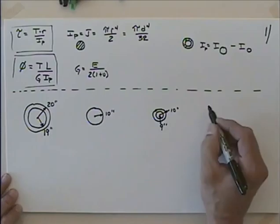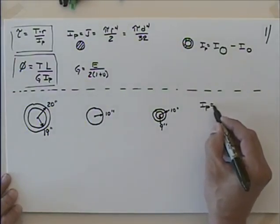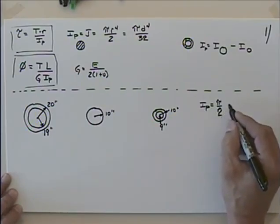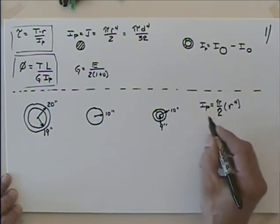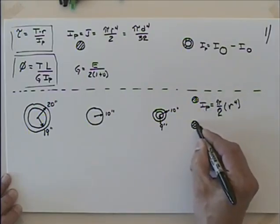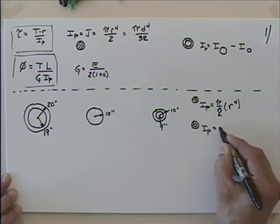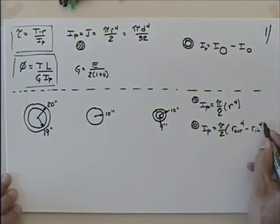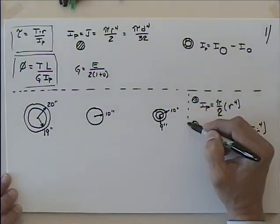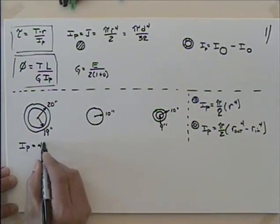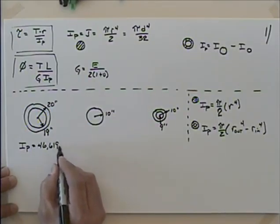The polar moment of inertia for a solid shaft is pi over 2 times the radius to the fourth. For a hollow one, the polar moment of inertia equals pi over 2 times the outside radius to the fourth minus the inside radius to the fourth. Using those equations, the polar moment of inertia for the large hollow shaft comes out to 46,619 inches to the fourth.